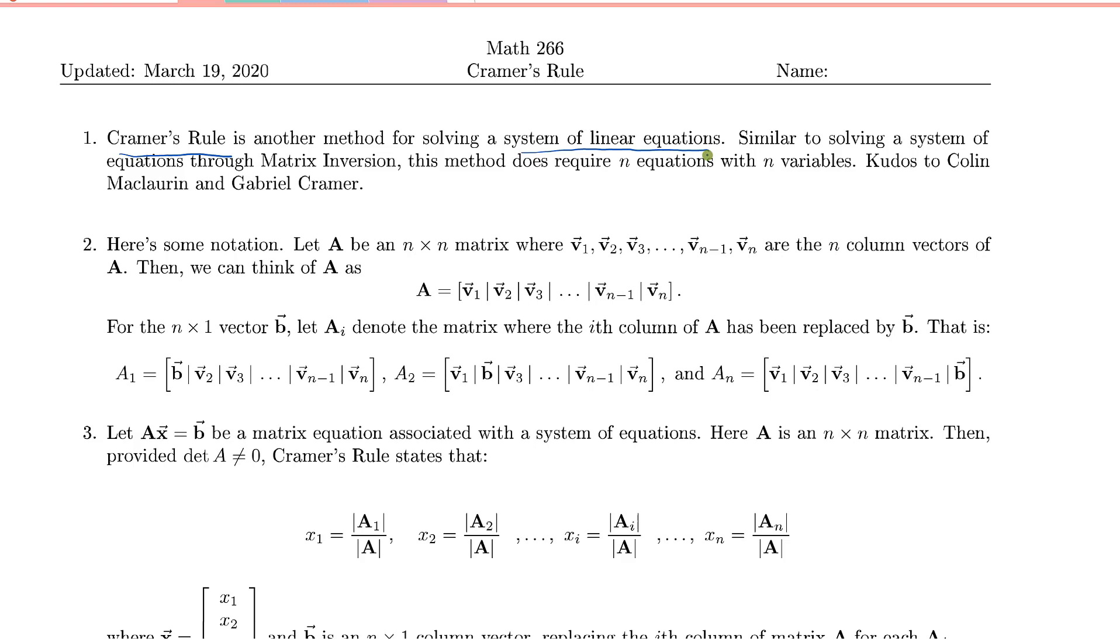Keep in mind that this method does require that we have an n-by-n coefficient matrix, and so for that case to occur, we need to have n equations with n variables, or one way to think about it is the same number of equations as we have unknowns.